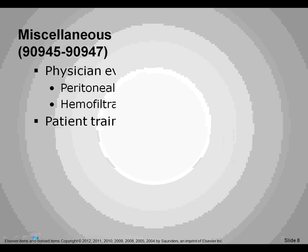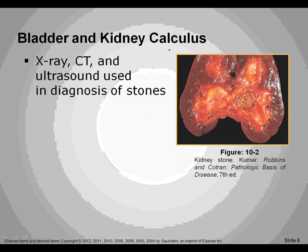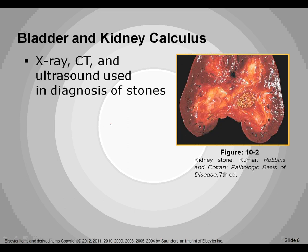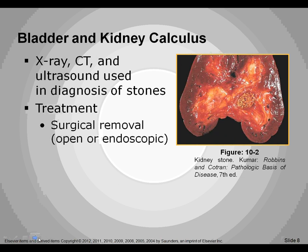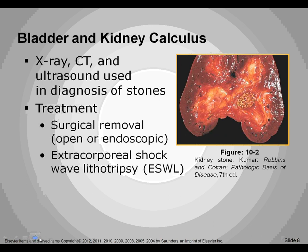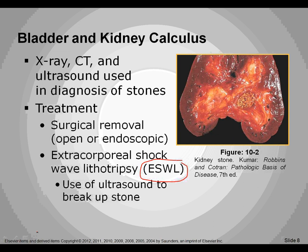This section covers kidney calculus. Another word for calculus is stone — we may see the word calculus or stone or both, but they basically have the same meaning. An x-ray, CT, or ultrasound can be used to diagnose the stones if they are present. Treatment is surgical removal, which can be done open or endoscopically. There is also extracorporeal shock wave lithotripsy, or ESWL, where the patient sits in a pool of water and ultrasound breaks up the stone so the patient can hopefully pass it naturally.